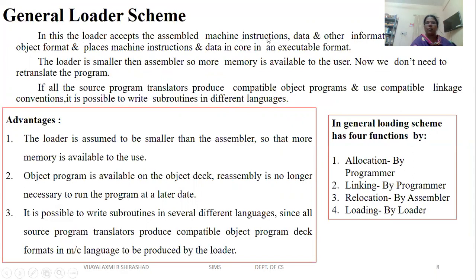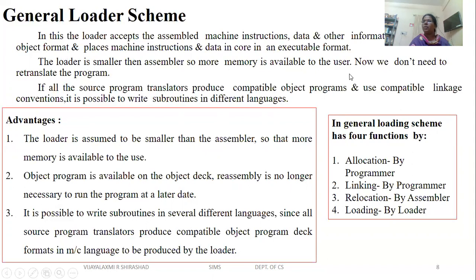General loader scheme: the loader accepts assembled machine instructions, data, and other information in object format, and places machine instructions and data in core in an executable format. The loader is smaller than the assembler, so more memory is available to the user. Once the assembled code is loaded through the loader, there is no need to re-translate the program.